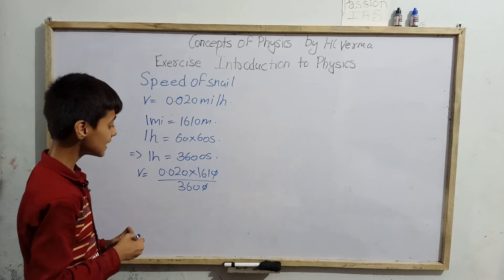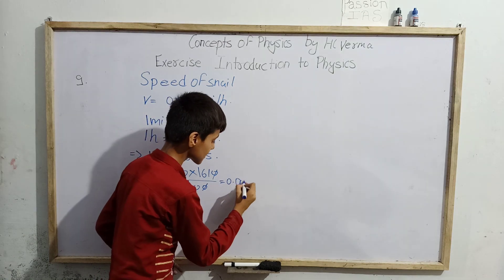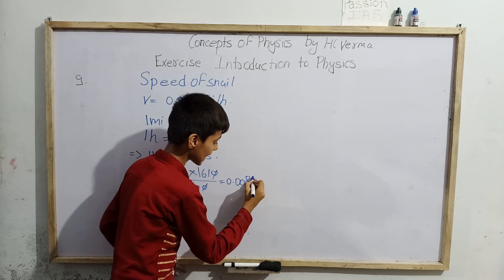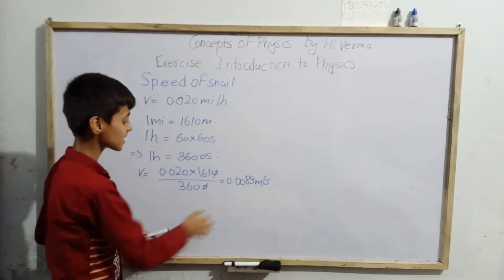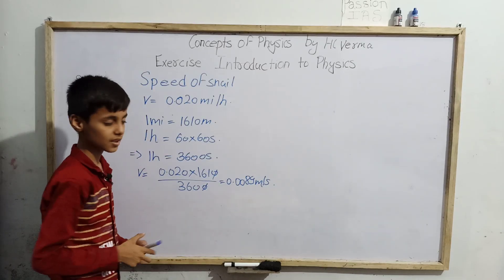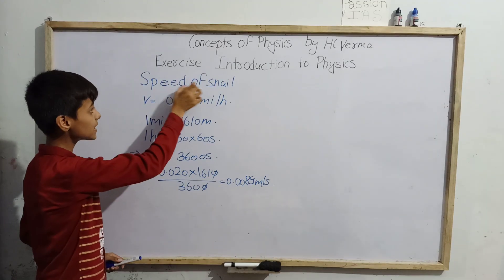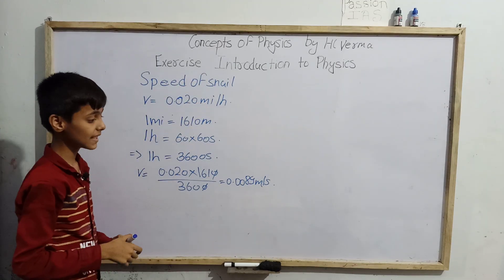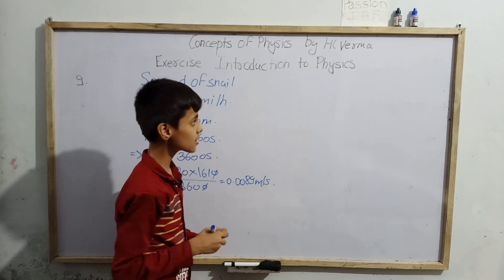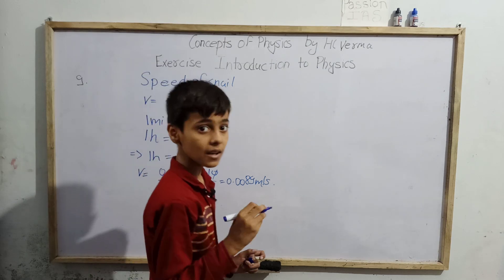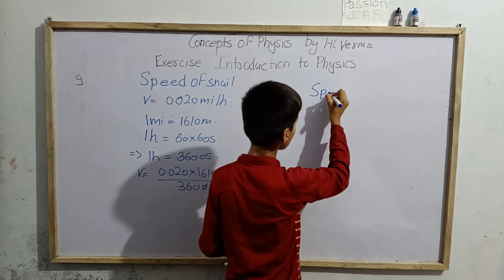Solving this, we get 0.0089 meters per second. So the average speed of the snail in SI units is 0.0089 meters per second. Now we will solve for the speed of the leopard.